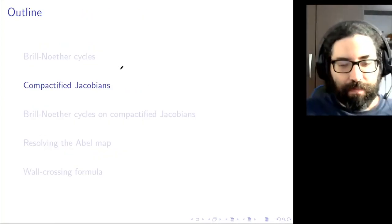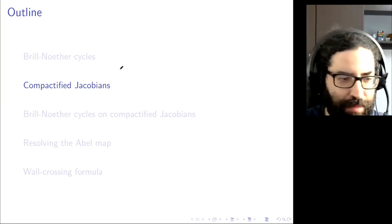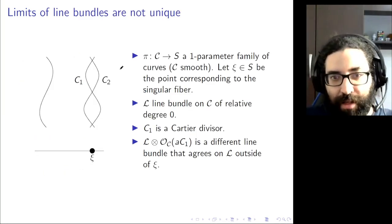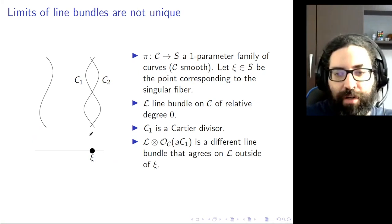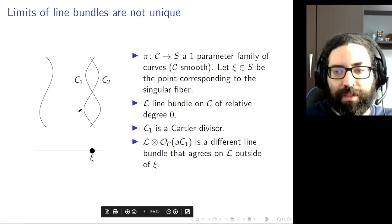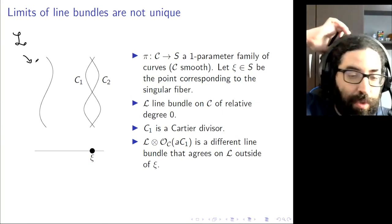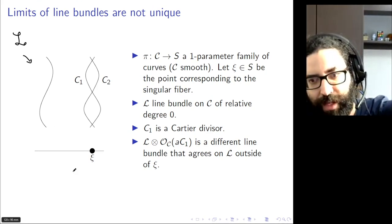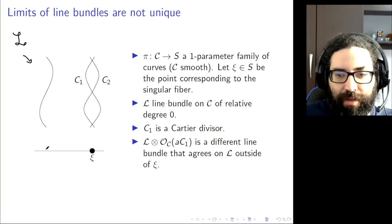How do we compactify Jacobians? This has been an ongoing problem since at least the 1960s, and the first issue is that limits of line bundles are not unique. If you have a degeneration of a smooth curve to a curve with two components C1 and C2, and a line bundle L on this family — which we can think of as a sequence of line bundles from smooth to singular fibers — you can twist L by the divisor C1. Since C1 does not intersect the smooth fibers, restricting L⊗O(C1) to the smooth fibers gives the same thing, but the limit on the special fiber is different.